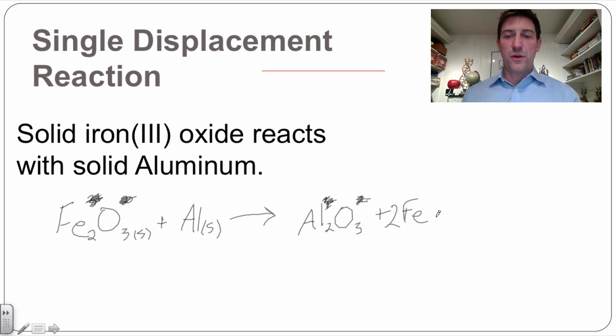And to balance this thing out, I should put the states of matter on here. This is a solid and this is a solid. I need two of the iron there. And to check my answer, two of the aluminum. This is my balanced equation. Here, watch it in action.